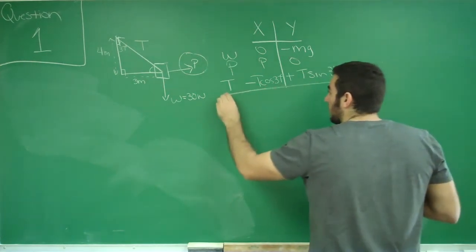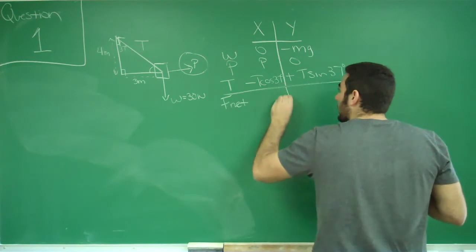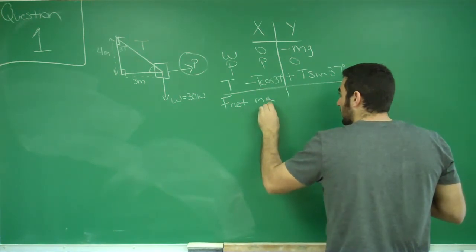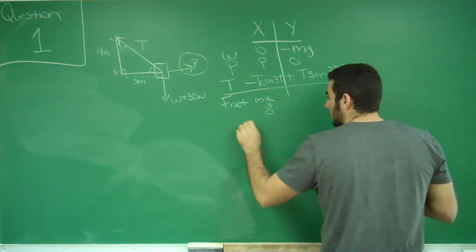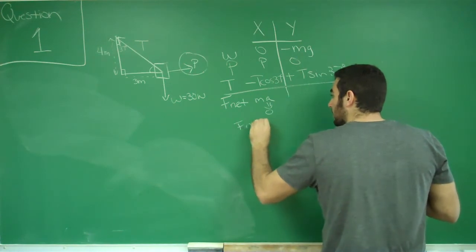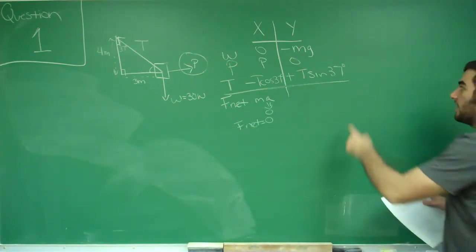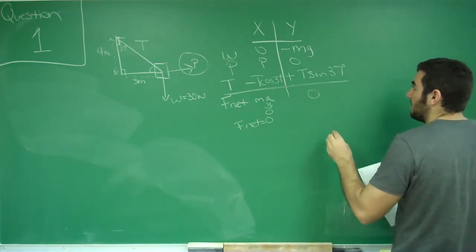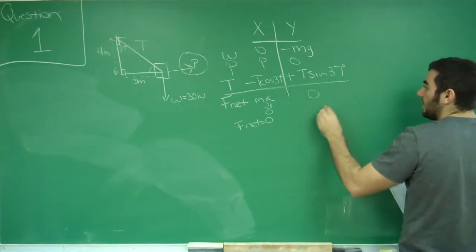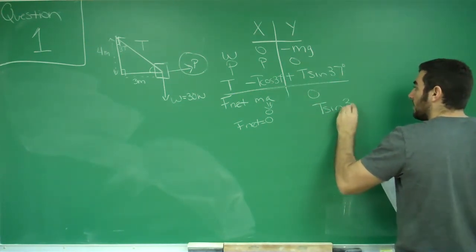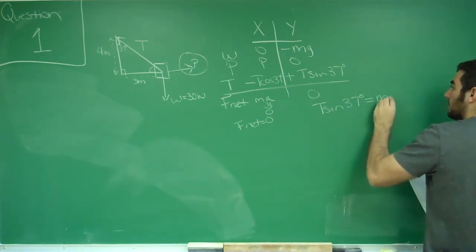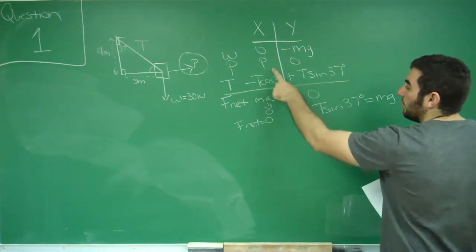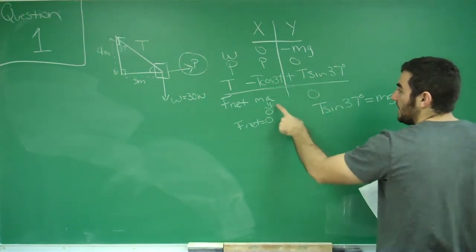I always like to show the net force. Net force equals mass times acceleration, but the block is not moving, so acceleration is zero, meaning net force equals zero. So: T sine 37 minus mg equals zero, which gives us T sine 37 degrees equals mg. And the pulling force minus the tension force in the x-direction equals zero.